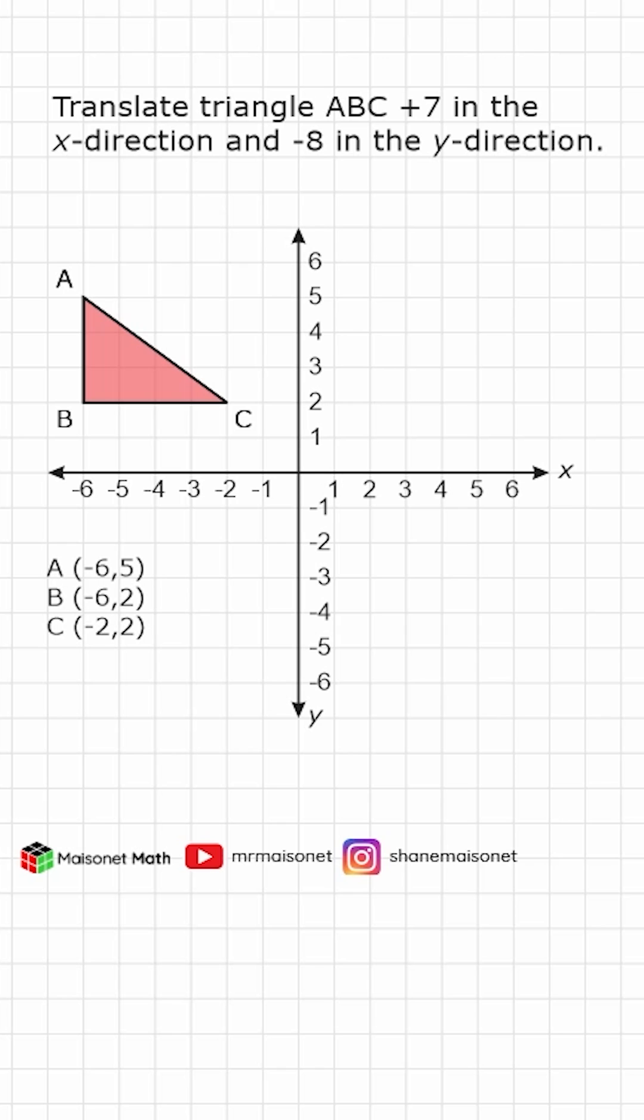Now, one way you can determine where your shape is going to be translated to is by first identifying what the original coordinates are. And then whatever the change in x is, you just apply that to your x values. And whatever the change in the y values are, you just apply that change to the y values.